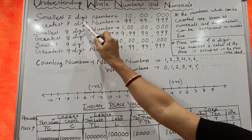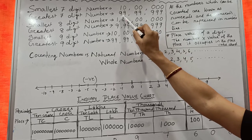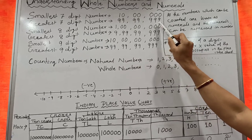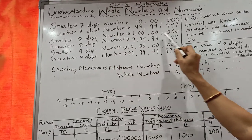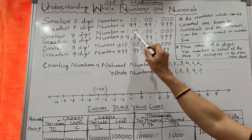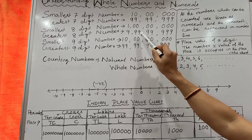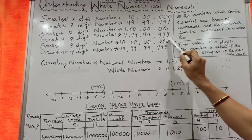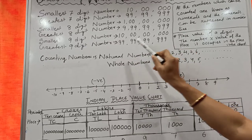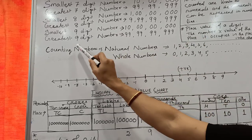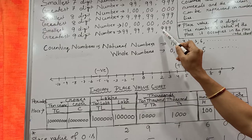The greatest 7 digit number is 99,99,999. Similarly, the smallest 8 digit number is 1 and 7 zeros, that is known as 1 crore. And the greatest 8 digit number is 8 nines, that means 9 crore 99,99,999. Similarly, the smallest 9 digit number is 1 and 8 zeros, that is known as 10 crore. And the greatest 9 digit number is 99 crore 99,99,999.